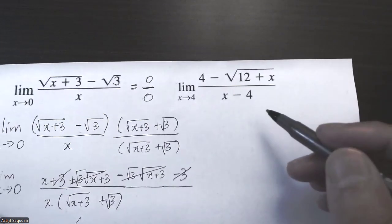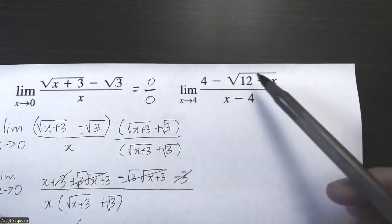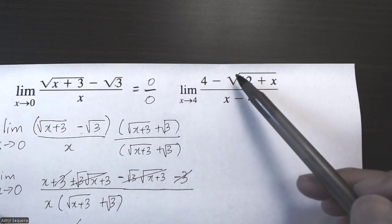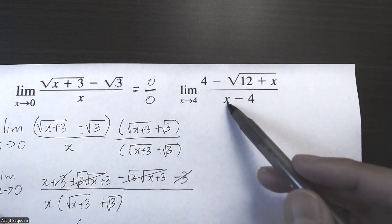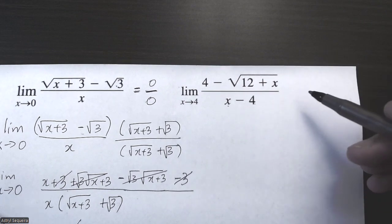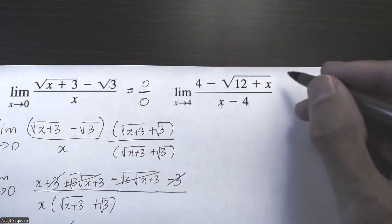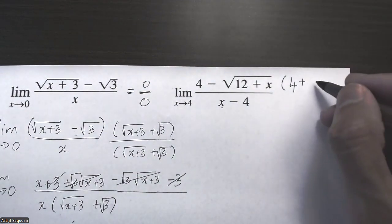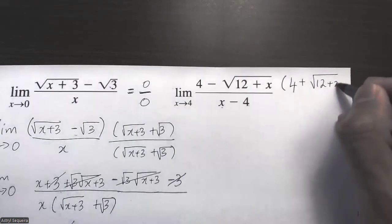Let's take a look at the second question. If I sub in four: 12 plus 4 is 16, the square root of 16 is 4, and 4 minus 4 is zero on top. On the bottom, 4 minus 4 is also zero. So I have zero over zero again, which is an indeterminate form, which means I need to rationalize. I need to multiply the top and bottom by four plus root of 12 plus x.